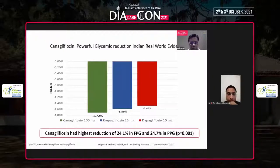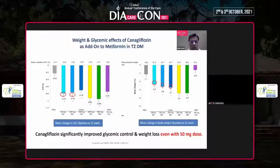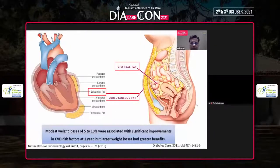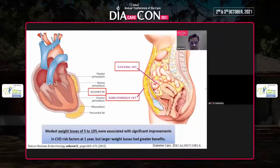If you look at the weight and glycemic effects of canagliflozin as an add-on to metformin, it's probably the best in class when it comes to HbA1c and body weight reduction. We all know that there are a lot of fat depots in our system — whether it's the liver, kidney, or pancreas — and they crosstalk and finally cause cardiovascular and chronic kidney disease. Anything which removes or reduces visceral fat is associated with significant improvement in cardiovascular risk factors.